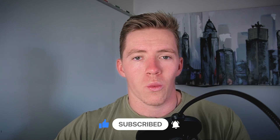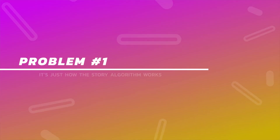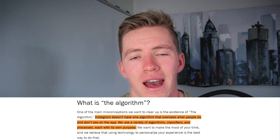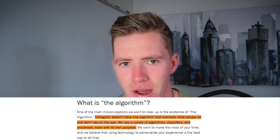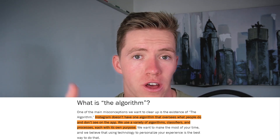There are two main reasons why your story views are low. The first one is all about how the story algorithm works. On Instagram there are many different algorithms — a separate algorithm that ranks content for the home feed, for the explore feed, for stories, for hashtags. They all have their own one that ranks things, weighting different factors as more or less important.